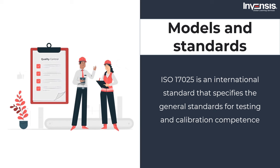Next are models and standards. ISO 17025 is an international standard that specifies the general testing and calibration competence standards. There are 15 technical criteria and 10 management needs. These requirements spell out what a laboratory must accomplish to be accredited. The management system refers to the framework of an organization's processes or activities for transforming resources into a product or service that fulfills the organization's goals, such as achieving consumer quality criteria, complying with regulations, or meeting environmental goals.